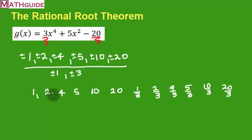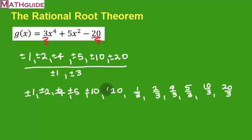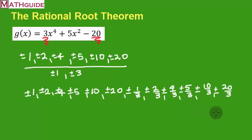So these are all the possible factors, and of course we're going to consider positives and negatives on them. What you would do next to actually find them is use synthetic division. So synthetic division would be used to determine which of these are actual roots or not. There are 12 times 2, because there's positives and negatives — 24 possible roots.